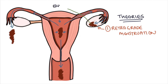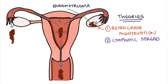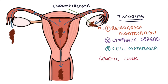There are several other theories. One could be that it's spread through the lymphatic system in a similar way to how cancers metastasize. Or it could be that cells elsewhere somehow change in a process called metaplasia — from their normal cell type to endometrial cells. There also seems to be a genetic component to developing endometriosis. No particular endometriosis gene has been found, but it does have a tendency to run in families.